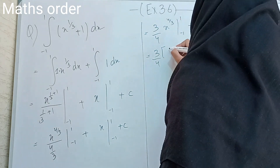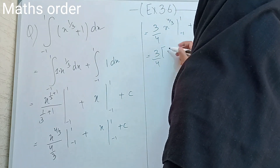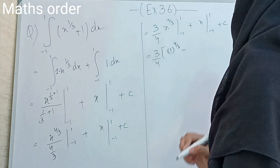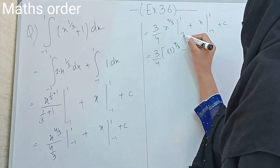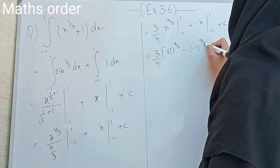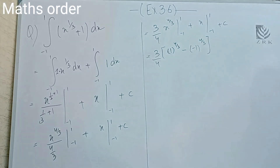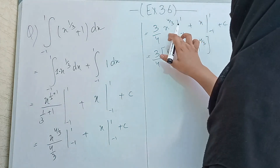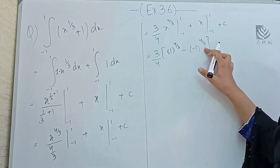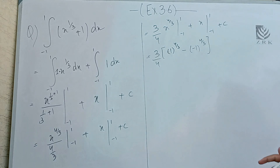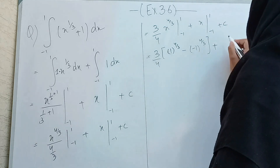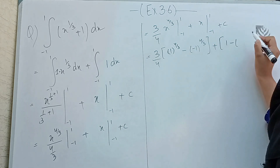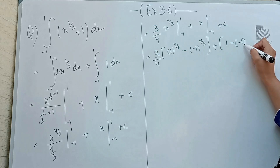Now we apply the upper and lower limits. We replace x with 1 giving (1)^(4/3), and then minus replacing x with minus 1 giving (minus 1)^(4/3). Note the sign between the terms is minus, not plus.